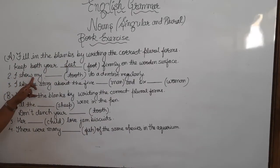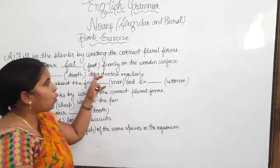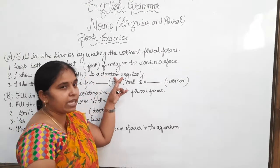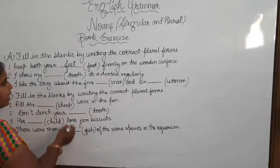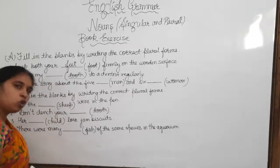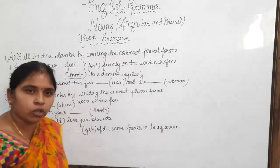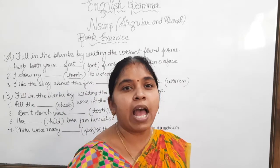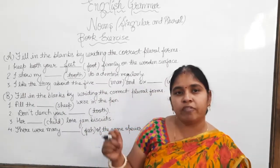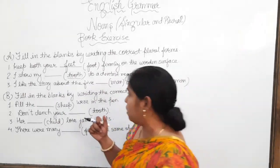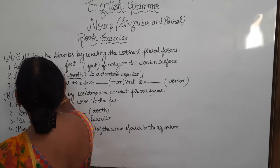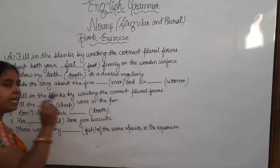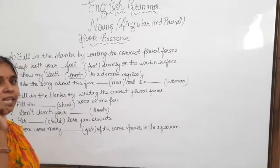Next: 'I show my dash to her dentist regularly.' In the bracket, the word is 'tooth.' Tooth is a singular noun, and the plural of tooth is 'teeth.' So here the plural noun 'teeth' — T-E-E-T-H — will come in the blank.